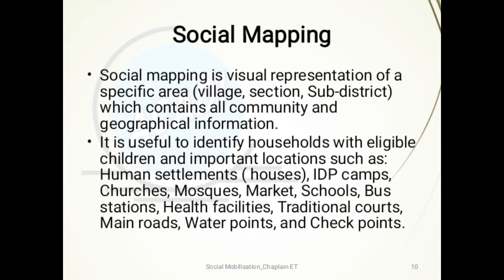Social mapping is a visual representation of a specific area which contains all community and geographical information. It is useful to identify households with eligible children and important locations such as human settlements, IDP camps, churches, mosques, markets, schools, bus stations, health facilities, traditional courts, main roads, water points, and checkpoints.